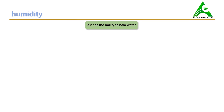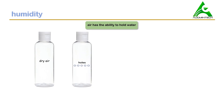To understand humidity, we'll make an analogy. Think of air contained inside a bottle. This air does not contain any water vapor, so this sample of air is known as dry air. If some holes are made on the surface of this bottle, they will determine the maximum amount of water vapor the air can hold. If we try to fill this bottle with water...